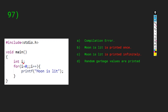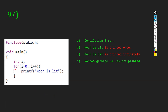We have a void main with a for loop: for(i=0; ; i++) with no condition. The options are: compilation fail, 'moon is lit' printed once, printed infinitely, or random garbage values. Garbage values won't be printed, and it won't throw a compilation error. Always remember: when no condition is present in a for loop, it runs infinite times. The answer is C: 'moon is lit' is printed infinitely.